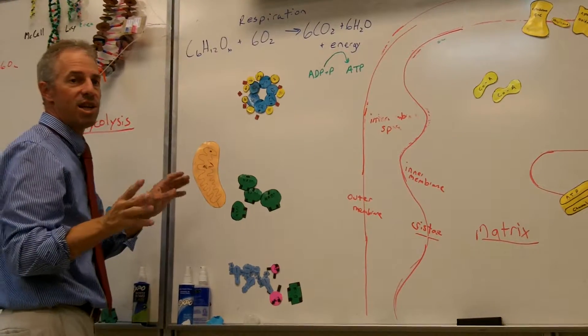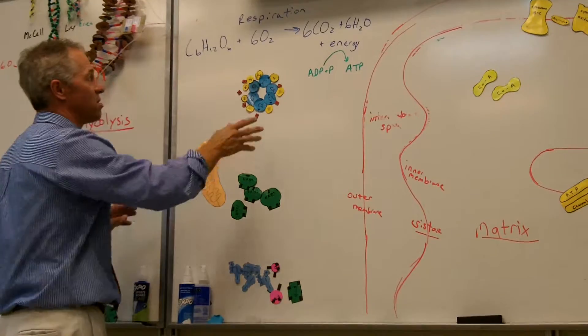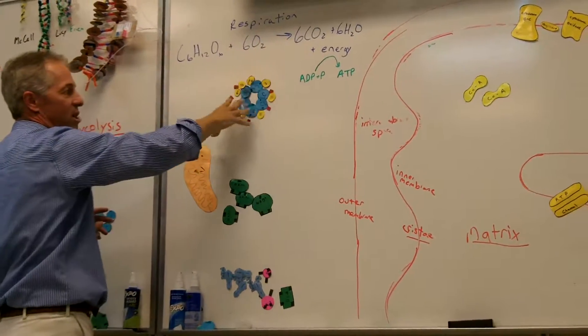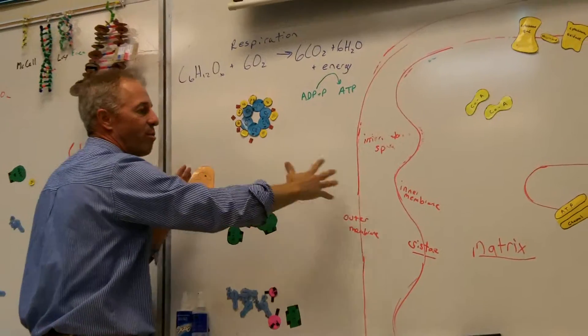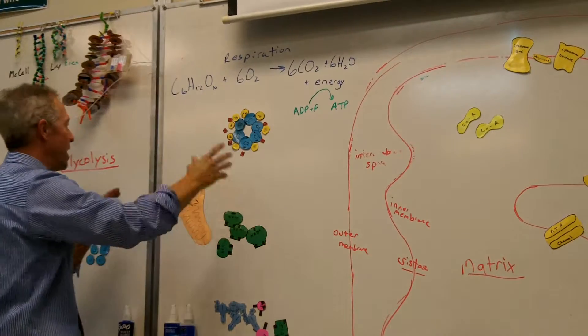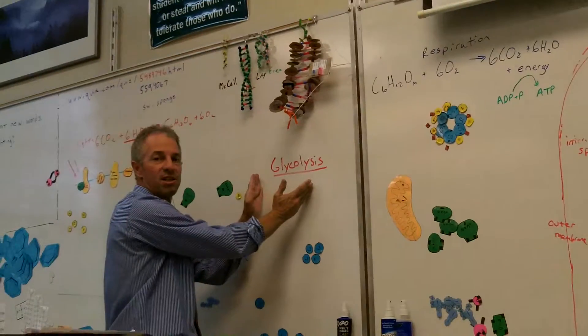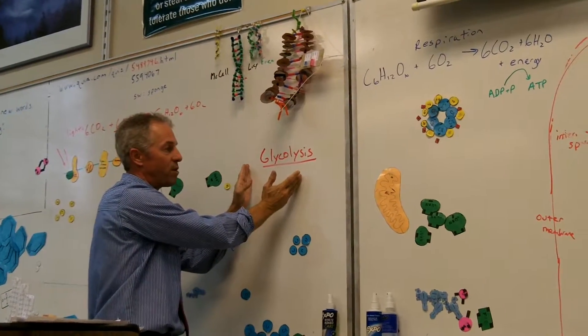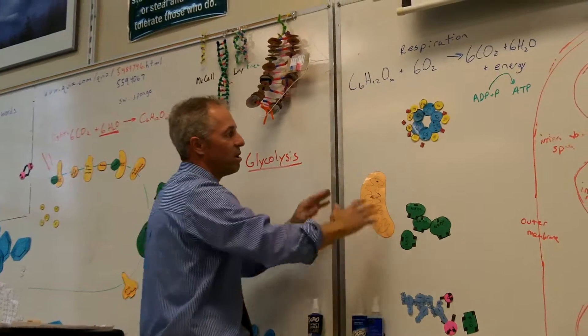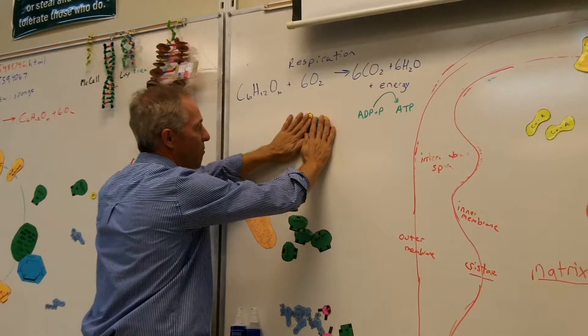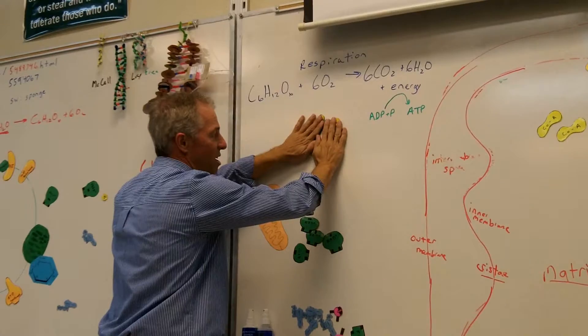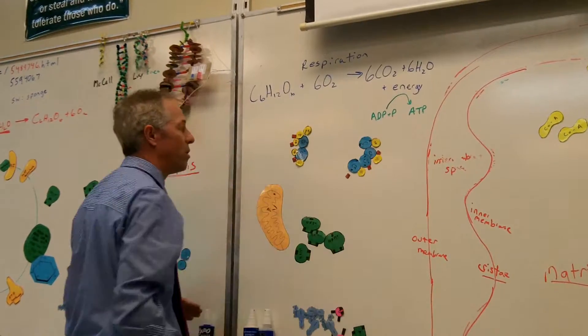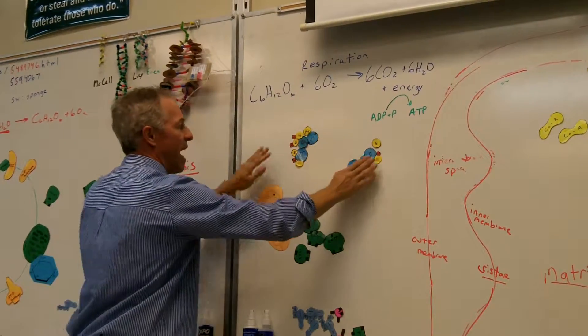This is breaking down glucose. This is respiration. This is a glucose molecule. We're going to be breaking it apart. And the first step is called glycolysis, the first step to breaking apart glucose. So here's a glucose molecule. Want me to show you glycolysis? Bam! We break the glucose molecule in half.